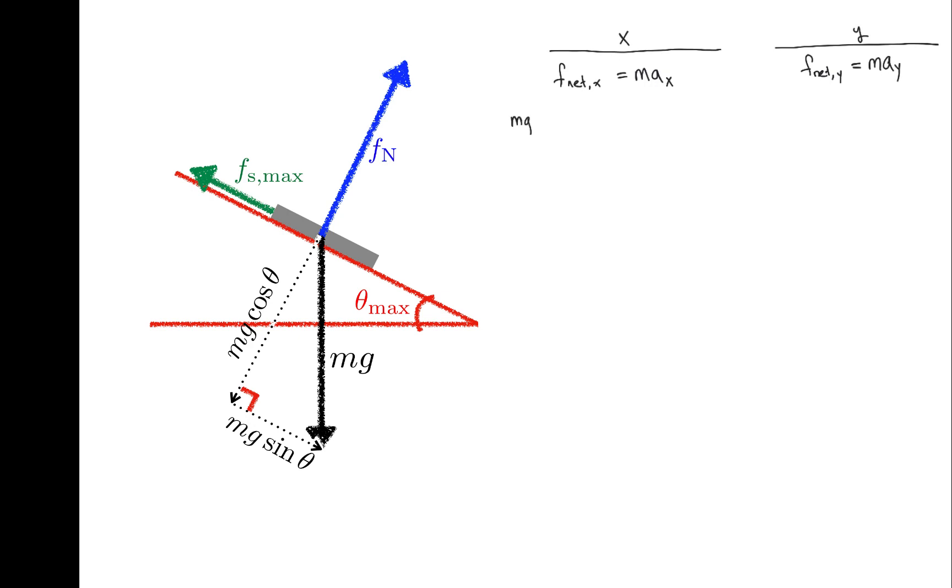And now I'll set up two equations using Newton's second law. In the x direction, mg sine theta minus fs is equal to max, and in the y direction, fn minus mg cosine theta is equal to may. I'm looking for the angle where the book just starts to slide, and that will happen if a is anything greater than zero, even by the tiniest bit. Let me set a equal to zero to look for the threshold. Rearranging, the maximum angle of theta will occur when mg sine theta is exactly equal to the force of friction.